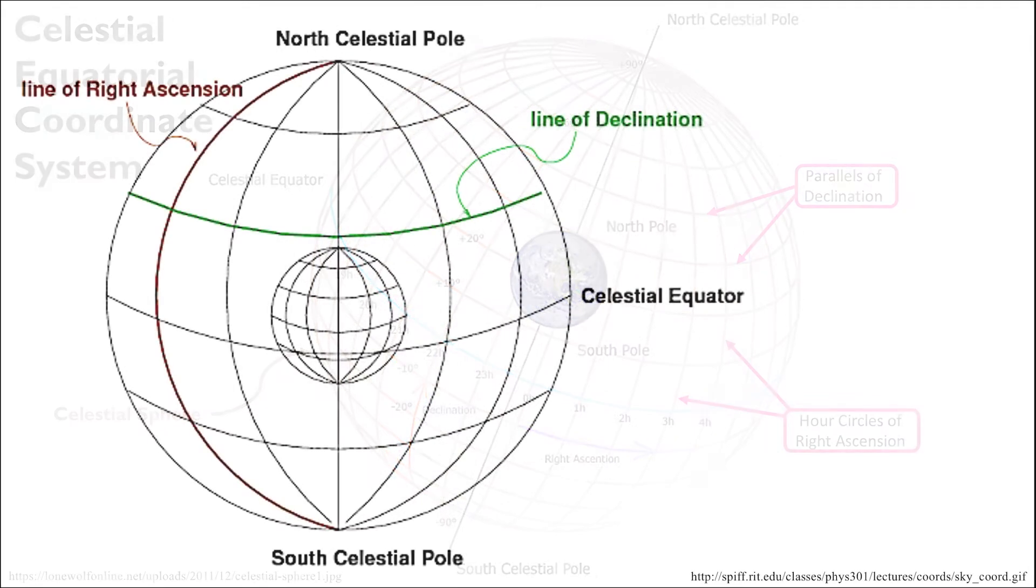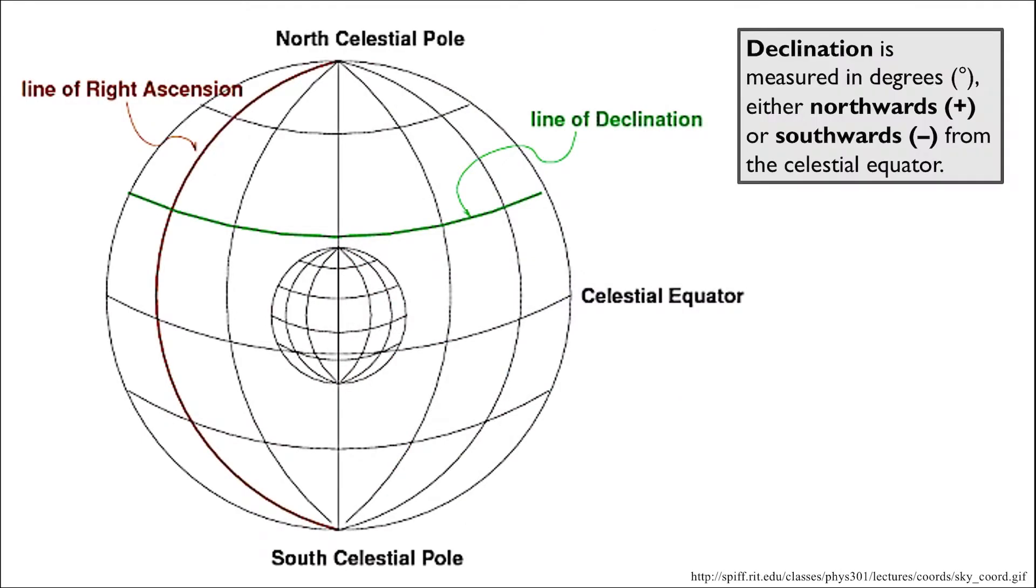So let's break this down. Declination, which is the equivalent to latitude, is measured in degrees, just the same as latitude itself. It is measured northwards or southwards from the celestial equator, which is located on the celestial sphere directly above Earth's own equator.